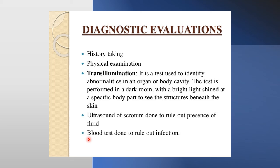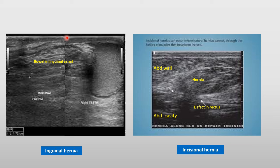Blood tests are done to rule out some form of infection in these patients. On ultrasound of the inguinal region and scrotum, you can see the right testicle and the inguinal canal occupied by small intestine — confirming this as an inguinal hernia. This is a picture of an incisional hernia, showing a defect in the rectus sheath and invagination of contents from the abdomen, especially intestine, into the subcutaneous subrectus space.